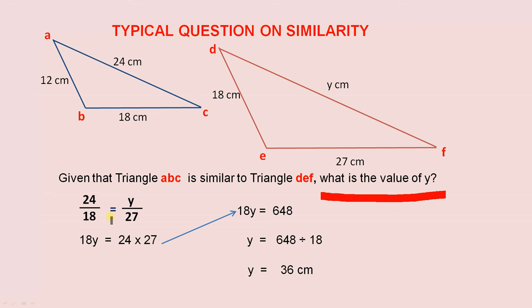And we can write the equal sign. Because the two fractions have the same ratio. Because the sides are corresponding. Because the triangles are similar. Now we use the special trick of cross multiplying that we saw in earlier videos. So 18 times Y equals 24 times 27. That's the cross multiplying. We simplify 24 times 27 to give us 648.